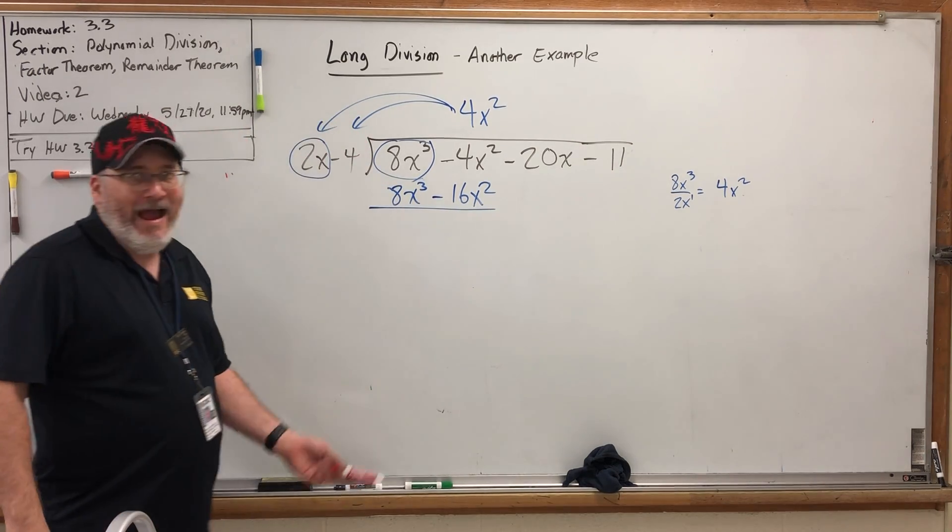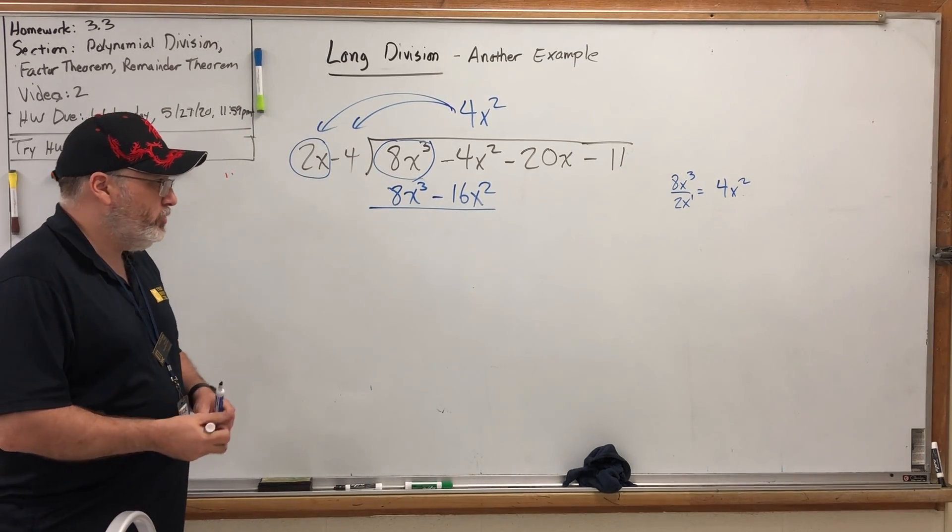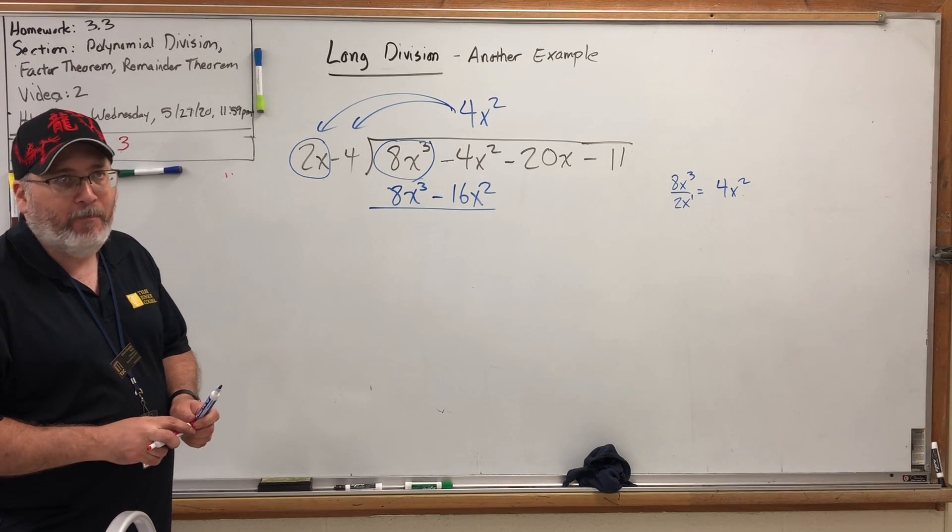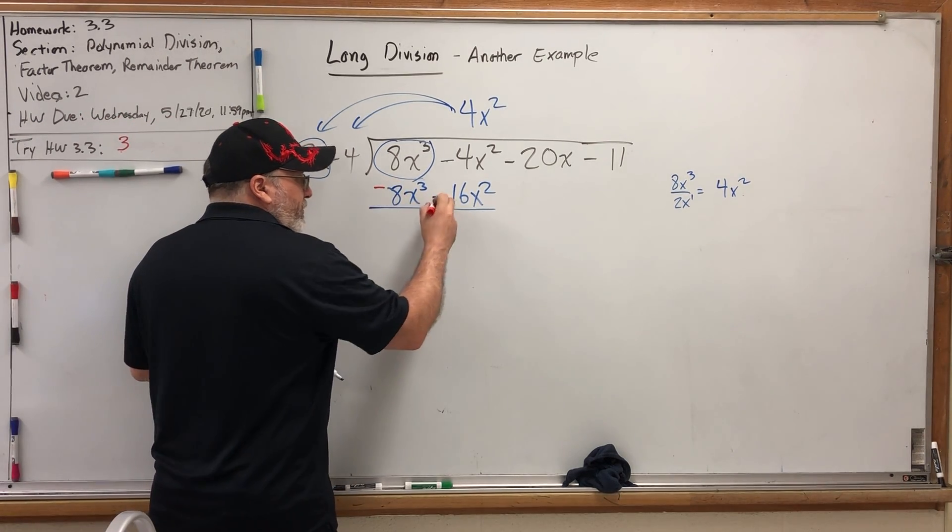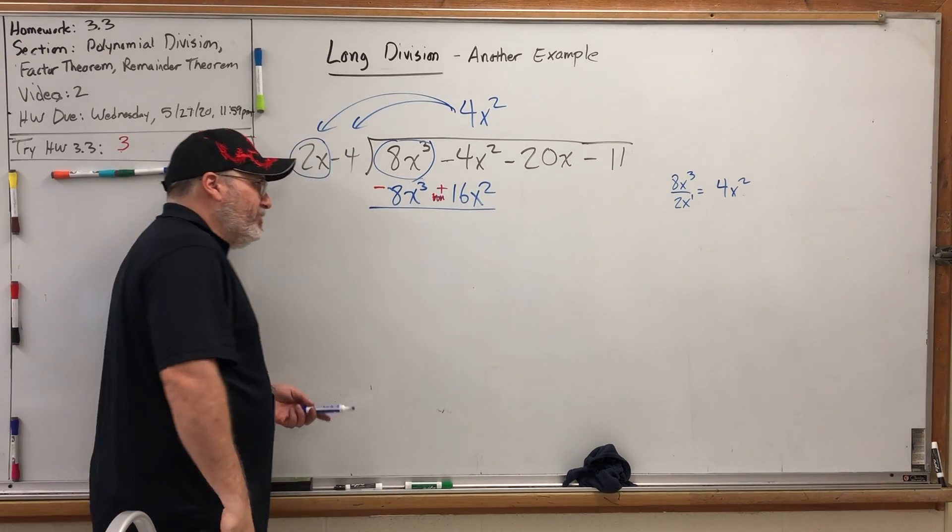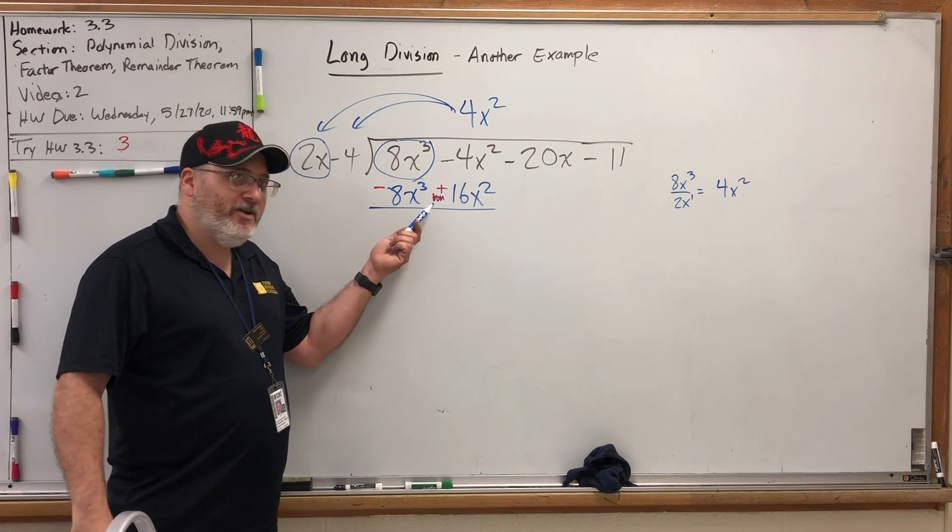And what do we do next? In a word, subtract. In more words, change the signs and combine. So change the 8 to a -8, the -16 to a positive 16. And you'll notice I actually scribbled out the minus sign.